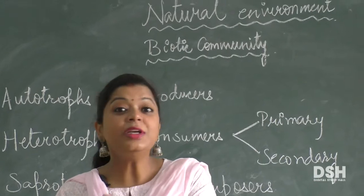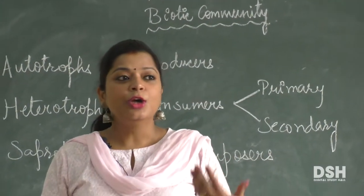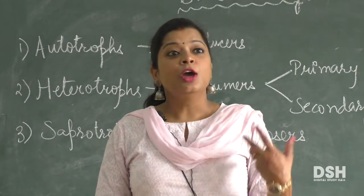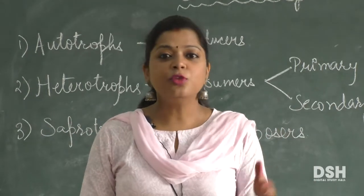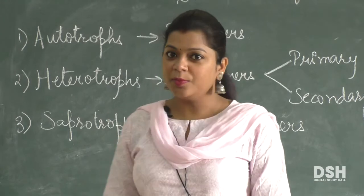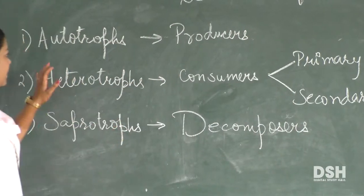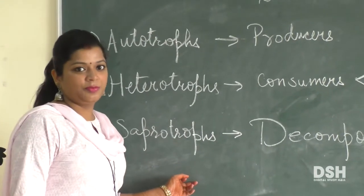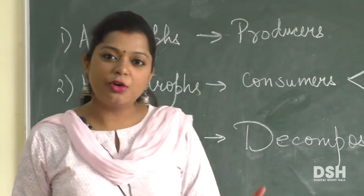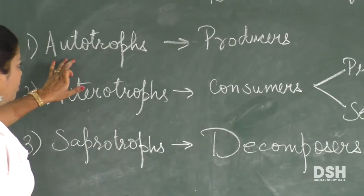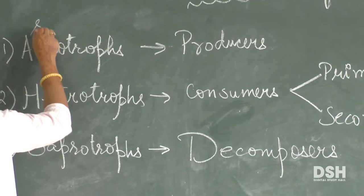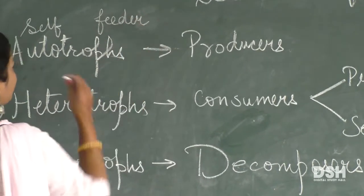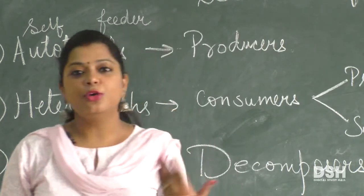Today we will study biotic community. The living components form our community and become dependent on other communities, so they form a biotic community. A biotic community basically consists of autotrophs, heterotrophs, and saprotrophs.